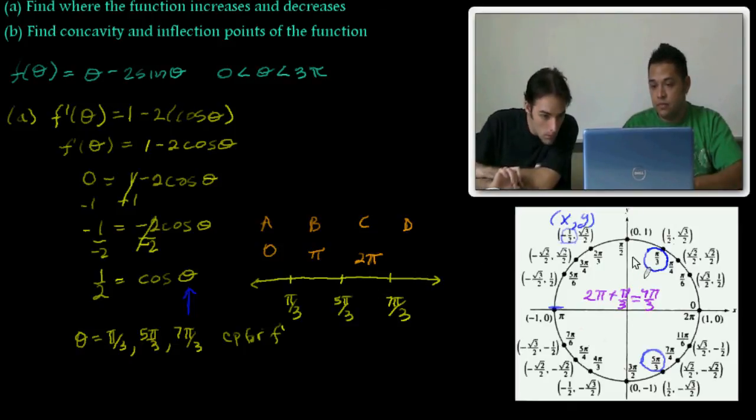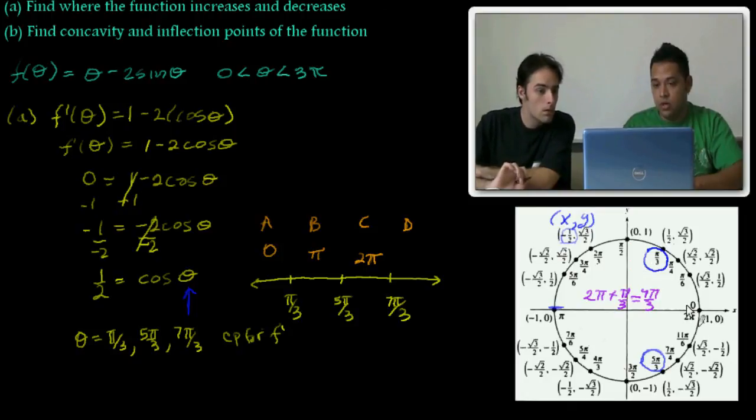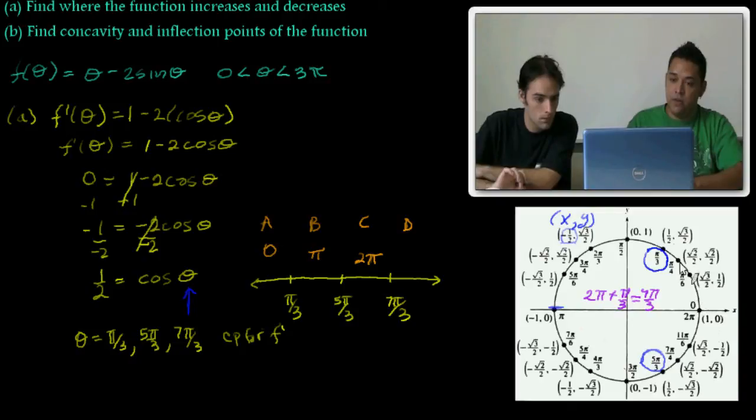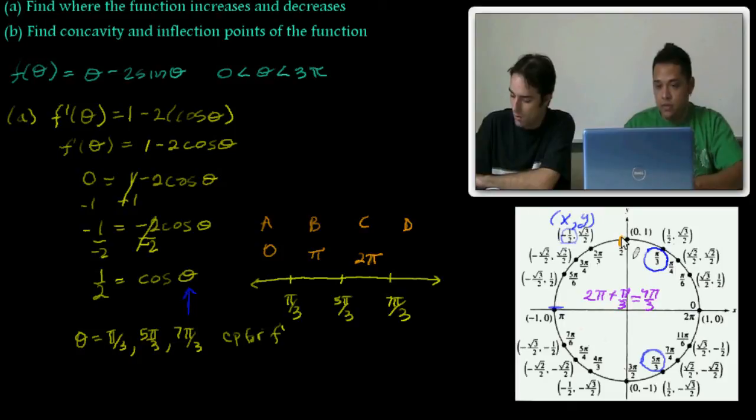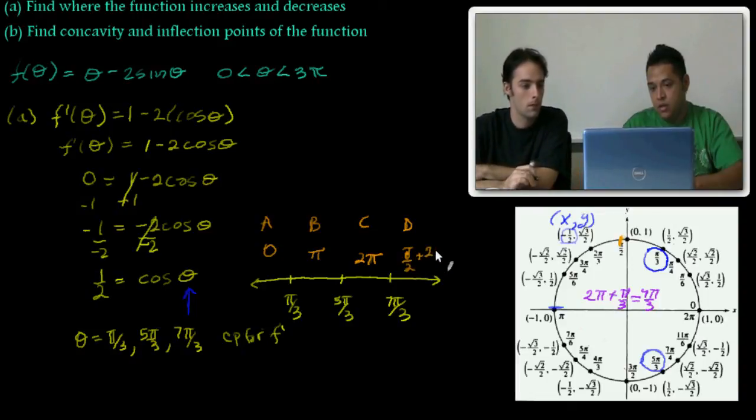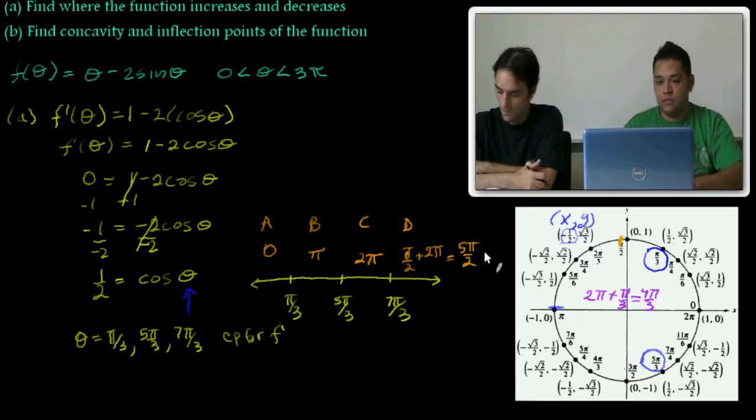And the last region would be going past 7 pi over 3. Pi over 2 plus 2 pi would be 5 pi over 2. And what do we do with those?